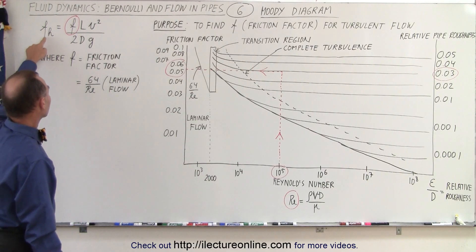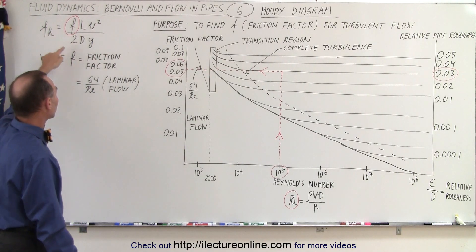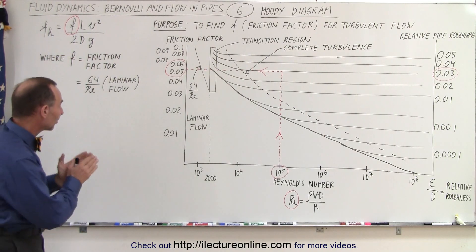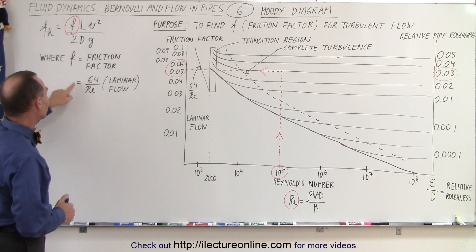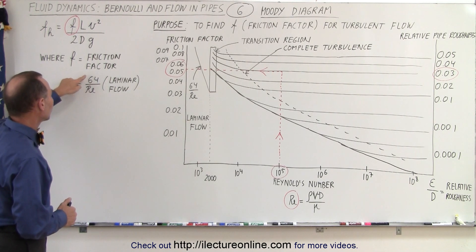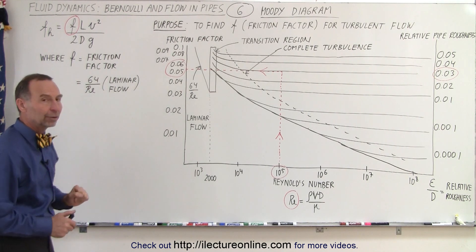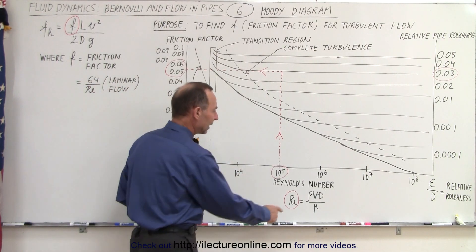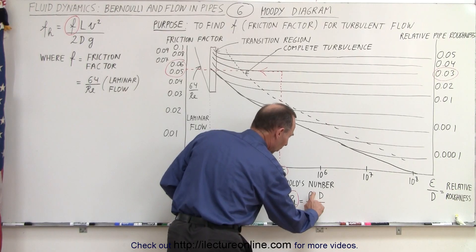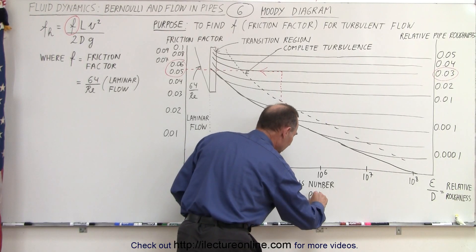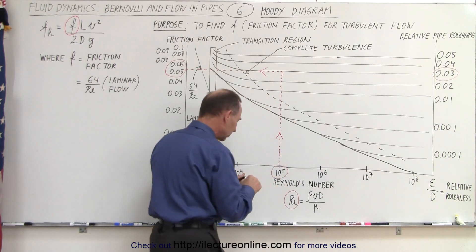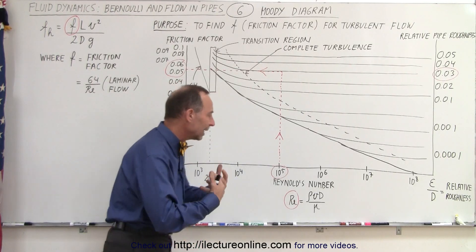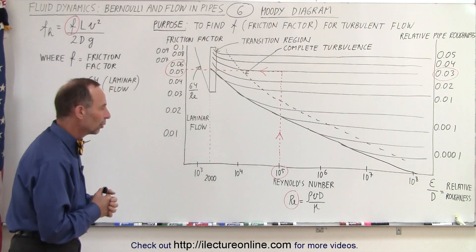To calculate the frictional head loss, we found this equation right here, which included what we call the friction factor. When the flow was laminar, we could calculate the friction factor by taking the number 64 and dividing it by the Reynolds number. Note that we can find the Reynolds number by taking the density of the fluid, times the velocity v of the fluid, times the diameter of the pipe, divided by the dynamic viscosity of the fluid.